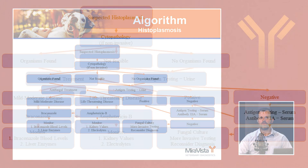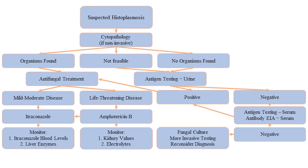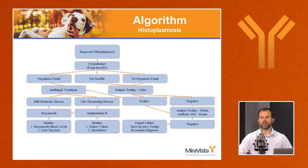To summarize the diagnostic algorithm: start with clinical suspicion. If cytopathology via fine needle aspirate or body fluid collection is feasible and organisms are found, that is highly specific and treatment can begin. If organisms aren't found, start with urine antigen testing — the most sensitive and specific non-invasive test. If positive, proceed with treatment. If negative, consider serum antigen and antibody testing, which picks up an additional 4–6% of cases. If all of those are negative, consider fungal culture, more invasive testing, or reconsidering the diagnosis, as the likelihood of histoplasmosis becomes quite low.